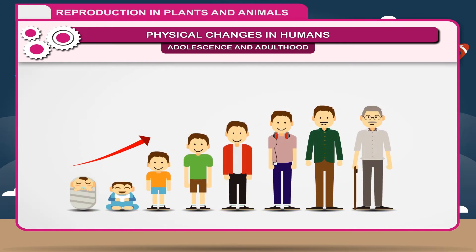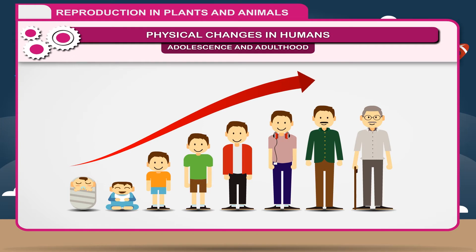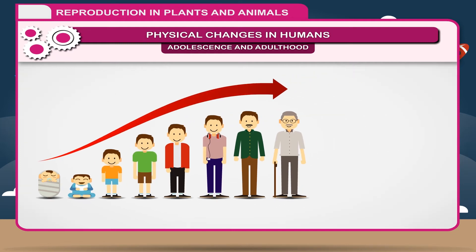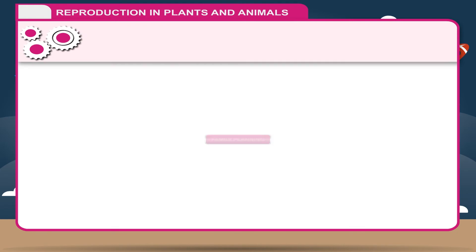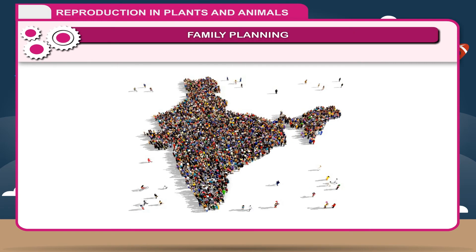Activity: It is very interesting to notice the changes in humans from birth to the maturity stage. In the early stages, the changes are faster, but in the adult stages, the changes are slower. Observe these changes with the help of photographs from the infant stage to maturity stage at certain intervals, which can be done with the help of parents and grandparents. Notice the following changes: changes in face, changes in overall body, changes in different organs, and changes in hair.